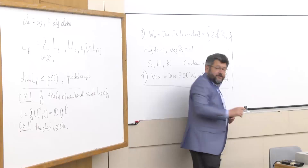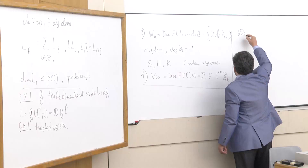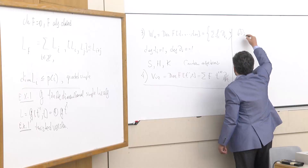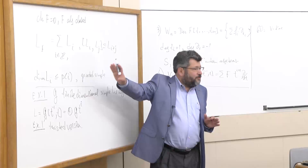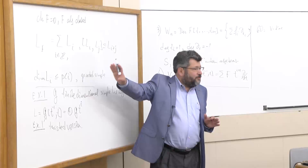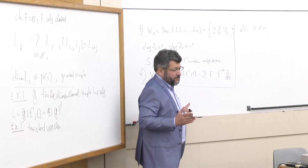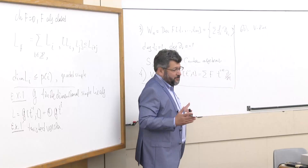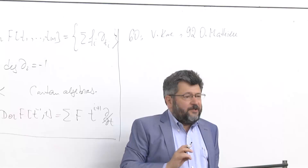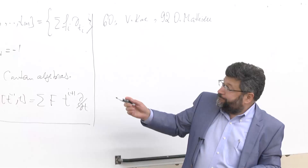So this problem — the classification of graded simple algebras of polynomial growth — was considered in the 1960s by Victor Kac, who proved that with certain technical restrictions, every graded simple algebra of polynomial growth is one of these four algebras. He conjectured that if you drop the technical restriction, which actually ruled out the Virasoro algebra, then you get only the Virasoro algebra. This conjecture was proved in 1992 by Olivier Mathieu — a very complicated proof, more than 100 pages in Inventiones.